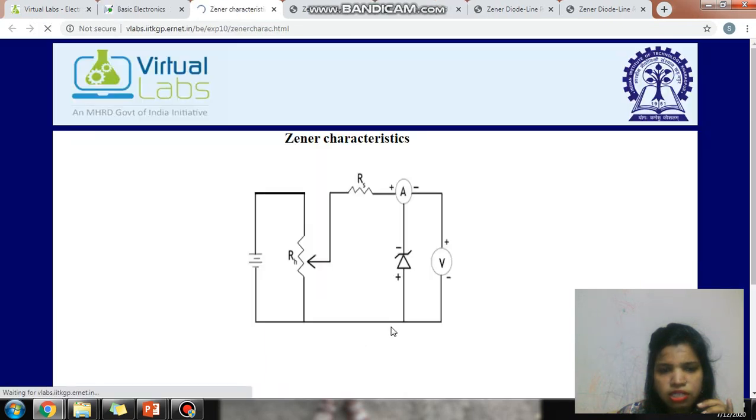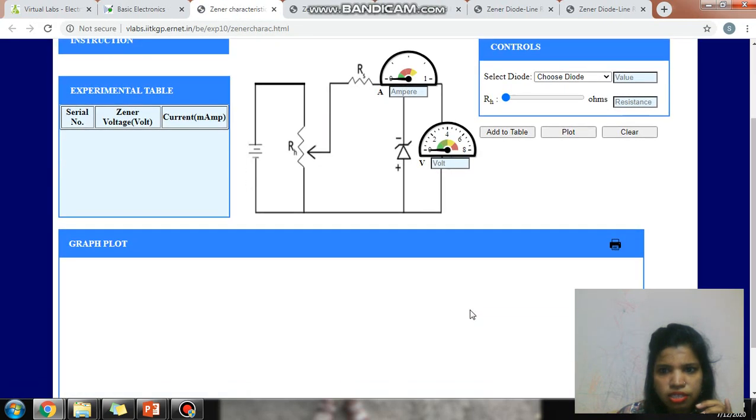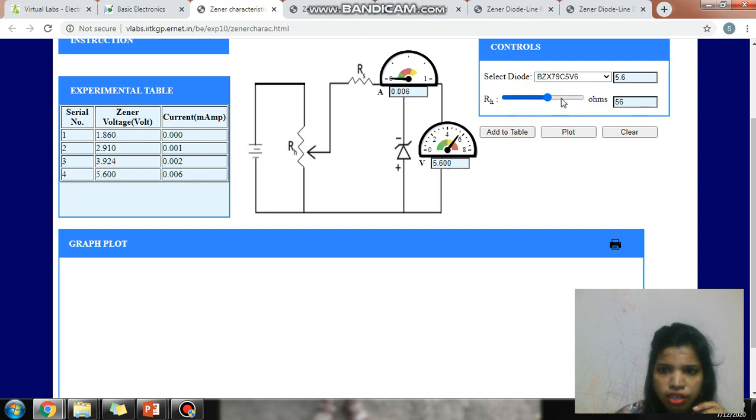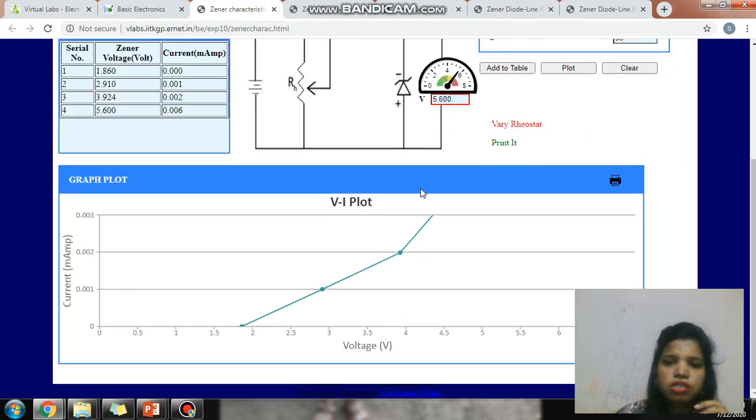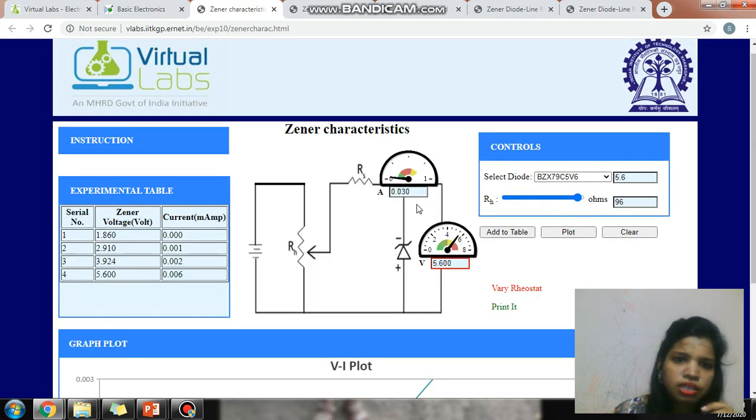Then there is Zener diode characteristics. In Zener diode characteristics, first of all you have to choose the Zener diode. Now you have to vary this resistance, add to the table, and check the plot. This is the characteristics of the Zener diode.